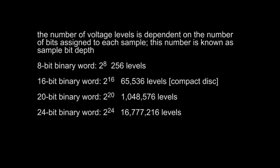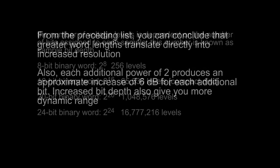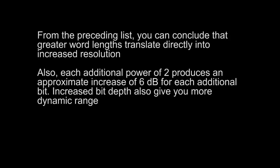16-bit is highly accurate. If sheets of typing paper were stacked to 22 feet, a single sheet of paper would represent one quantization level. With a 20-bit system the stack of paper would be 349 feet. With a 24-bit system the stack of paper would be 5,592 feet. If the distance between New York and LA were measured at 24-bit accuracy, the measurement would be accurate to 9 inches. Greater word lengths translate directly into increased resolution, but also each additional power of 2 halves the spacing between adjacent branches in the binary tree. This produces an approximate increase of 6 dB for each additional bit. Increased bit depth also gives you more dynamic range. For a 16-bit system, 6 x 16 gives you about 96 dB of dynamic range.